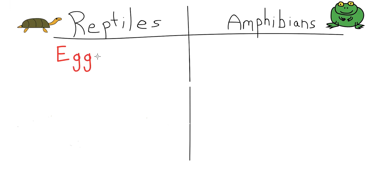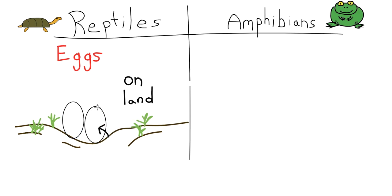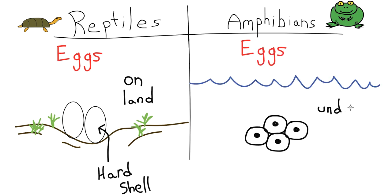The first difference between the classes is how they lay eggs. Reptile eggs have hard shells around them. They are protected from dehydration and laid on land, usually buried. Amphibian eggs are most commonly laid under water. They don't have shells and are surrounded by a jelly-like coating.